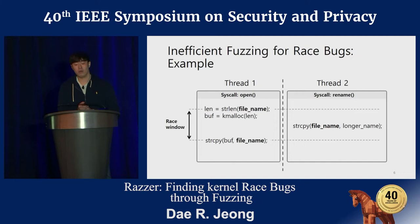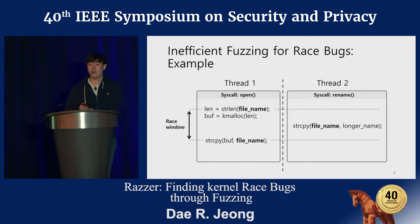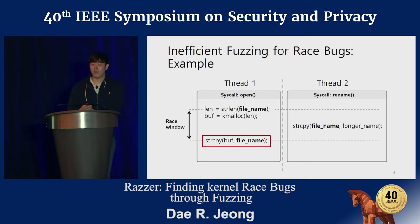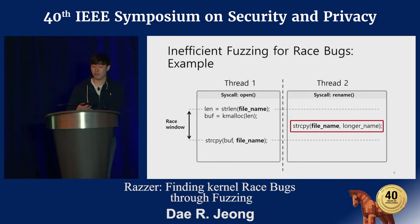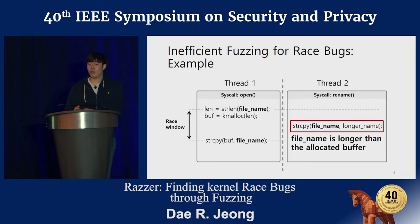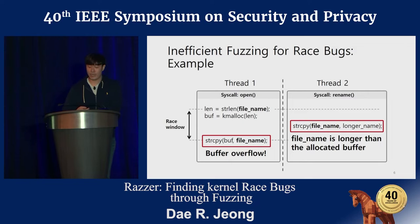To better explain this, let me take an example — a simplified kernel race bug. In this example, there are two different threads. Thread one is trying to clone the filename object: it first computes the length of the given filename, and allocates a buffer using that length, then copies the original filename to the newly allocated buffer. But during this cloning process, what would happen if thread two modifies the filename object into a longer one? If the filename changes in the middle, the allocated buffer would be smaller than the size to be copied, so buffer overflow would happen.